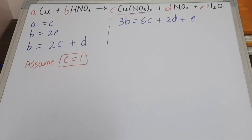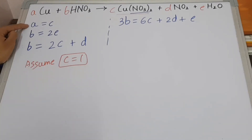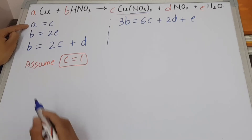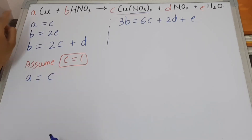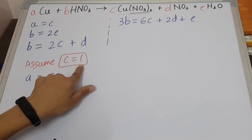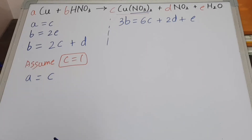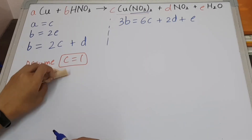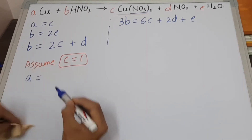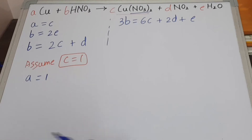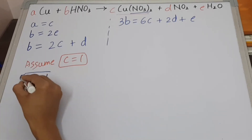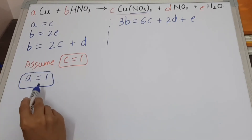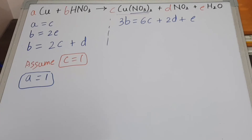Now after this, take the first equation. We had A equal to C. Since C equals 1, it means that A equals 1. So we got the value of A, which is 1.